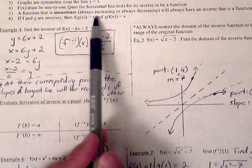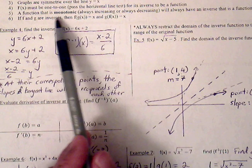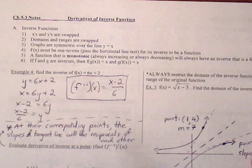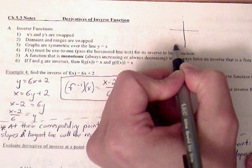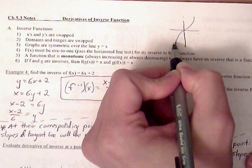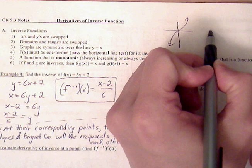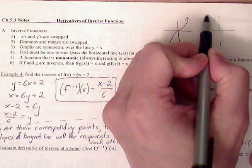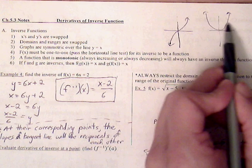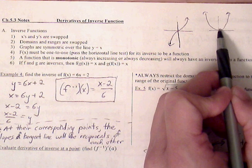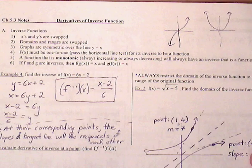A function that is monotonic — meaning it's always increasing — will always have an inverse that is a function. So if you have a graph that is always increasing, like y equals x cubed, then its inverse will pass the vertical line test. However, y equals x squared does not pass the horizontal line test, so its inverse, which is like a sideways parabola, will not pass the vertical line test.